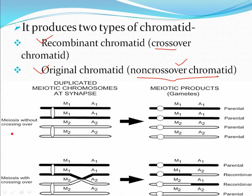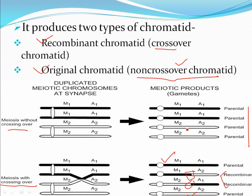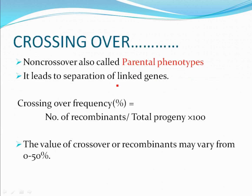Meiosis without crossing over: suppose crossing over is not there — you will not get a recombinant product; you will get only parental products. If meiosis occurs with crossing over, you will get both recombinant and original products. So some are parental and some are different — those different ones are called recombinants. The recombinants are the product of crossing over. The non-crossover chromatids are the original or parental chromatids, and the non-crossover is also called the parental phenotype.